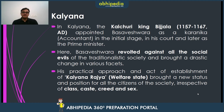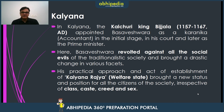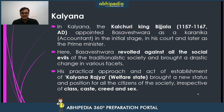Lord Basweshwara is associated with Kalyana. In Kalyana there was a Kalachuri king, Bijjala, whose period was 1157 to 1167 AD. He appointed Basweshwara as a karnika — that is, accountant — in the initial stages of his life in his court, and later he was appointed as the Prime Minister.